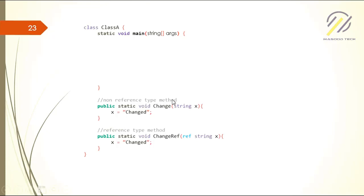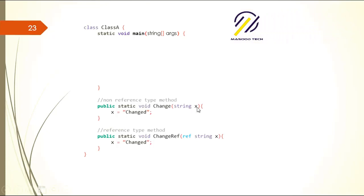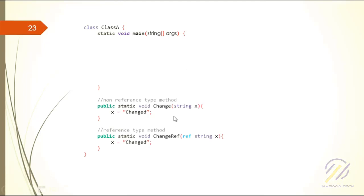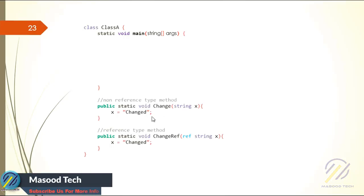Non-primitive types include string. Primitive types are things like char, int, double, decimal, date, and so on — there's a long list. Everything else is non-primitive. So string is a non-primitive type, and when you pass a string it should be changed and give you a different result.